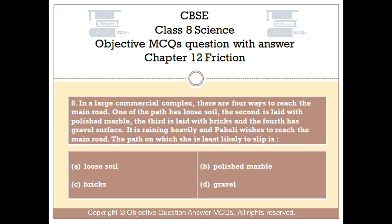Question number 8. In a large commercial complex, there are four ways to reach the main road. One path has loose soil, the second is laid with polished marble, the third is laid with bricks, and the fourth has a gravel surface. It is raining heavily and Pahali wishes to reach the main road. The path on which she is least likely to slip is: Option A: Loose soil. Option B: Polished marble. Option C: Bricks. Option D: Gravel.